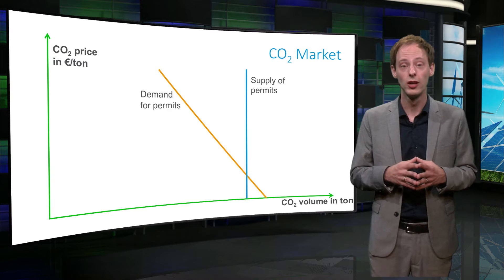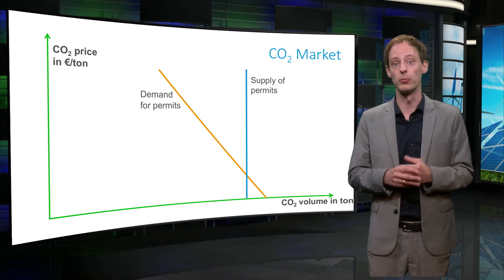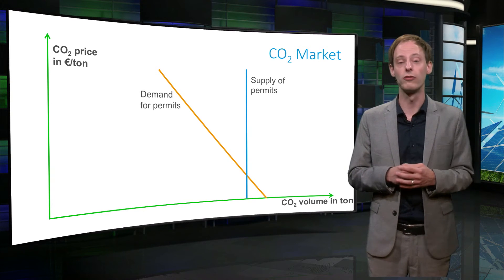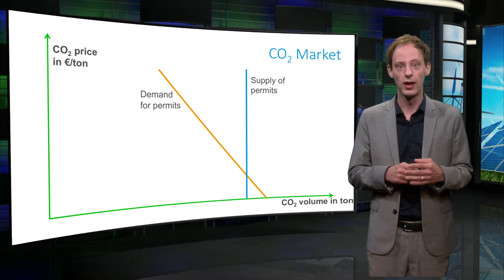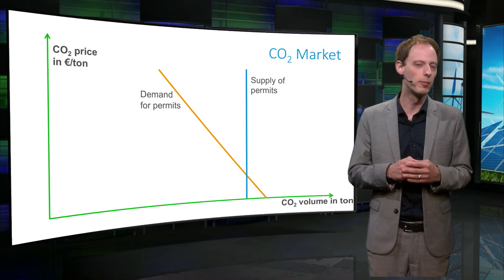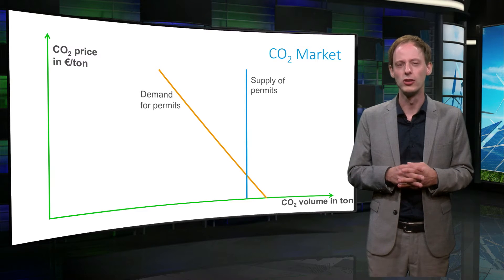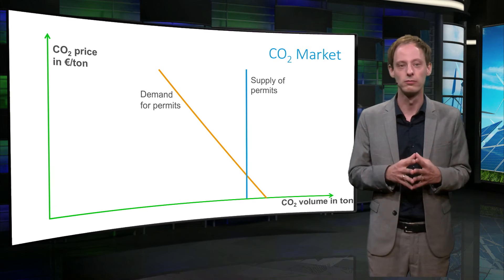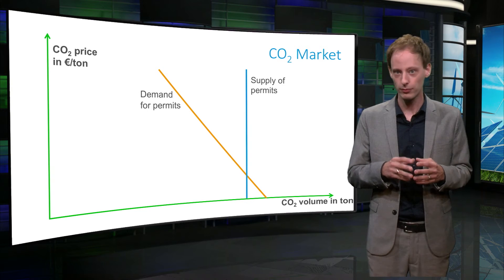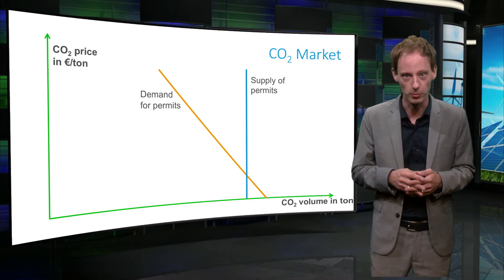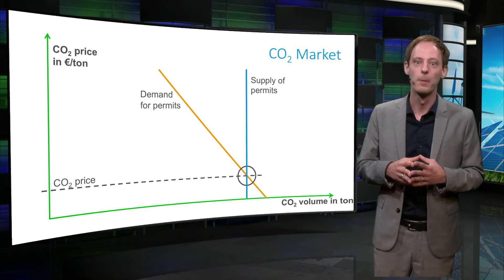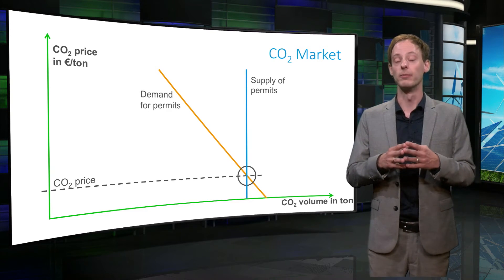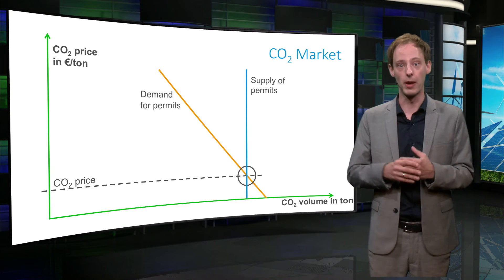Demand for credits, however, does depend on the permit price, because the cost of reducing CO2 varies a lot between different companies. The more it costs you to avoid emissions, the more you are willing to pay for purchasing credits so you don't have to cut emissions yourself. The intersection of the supply and demand curve determines the market price, and price changes can be caused by either shifts in supply or in demand.